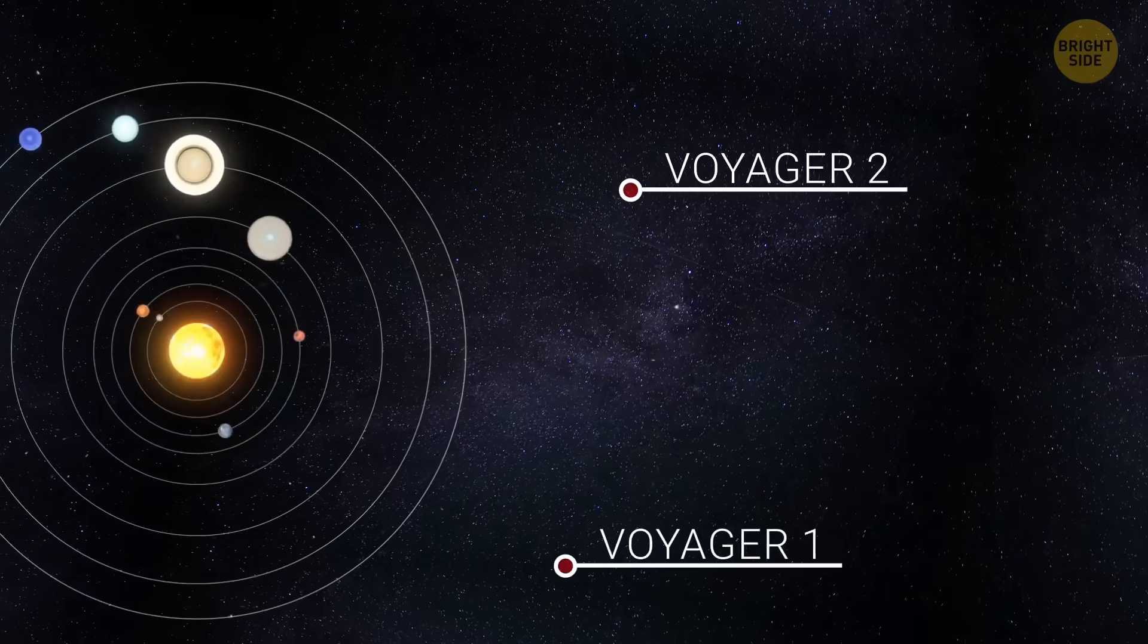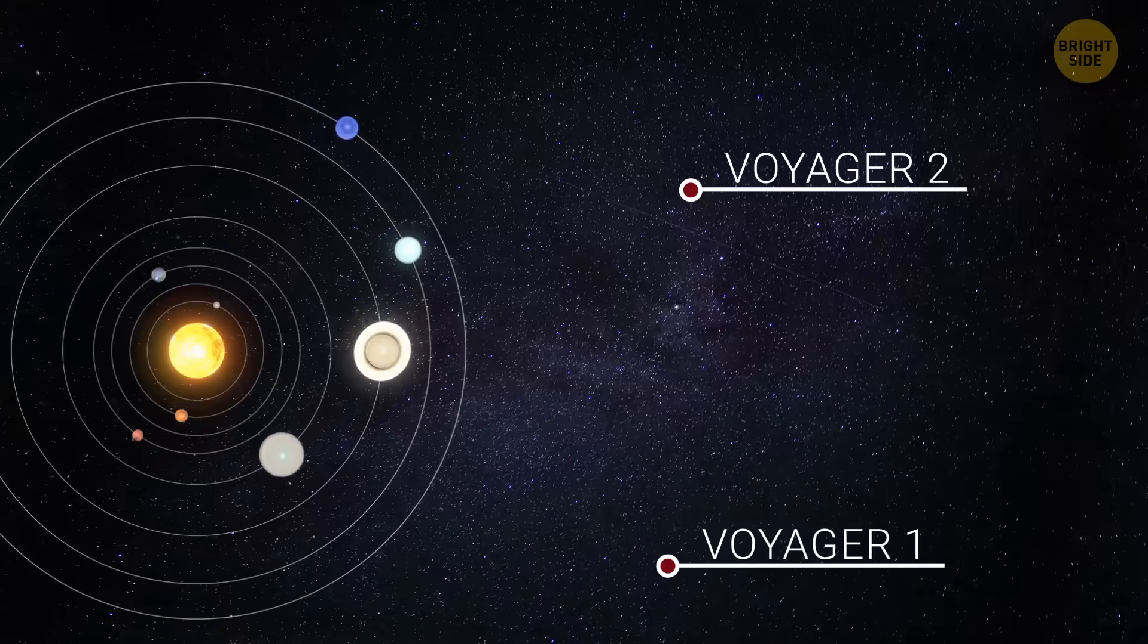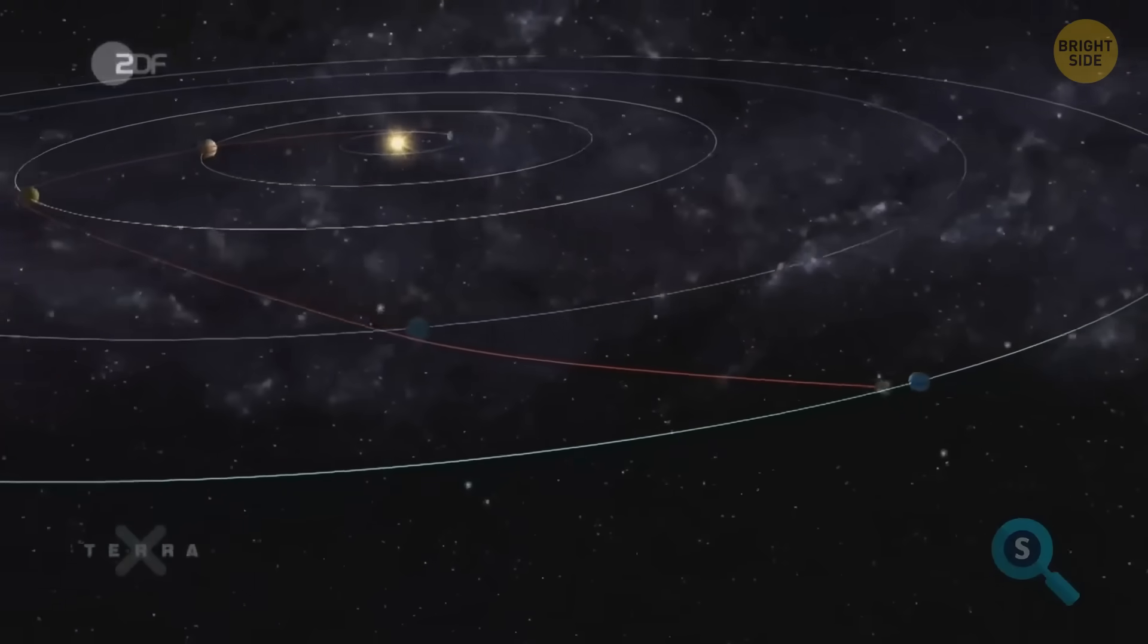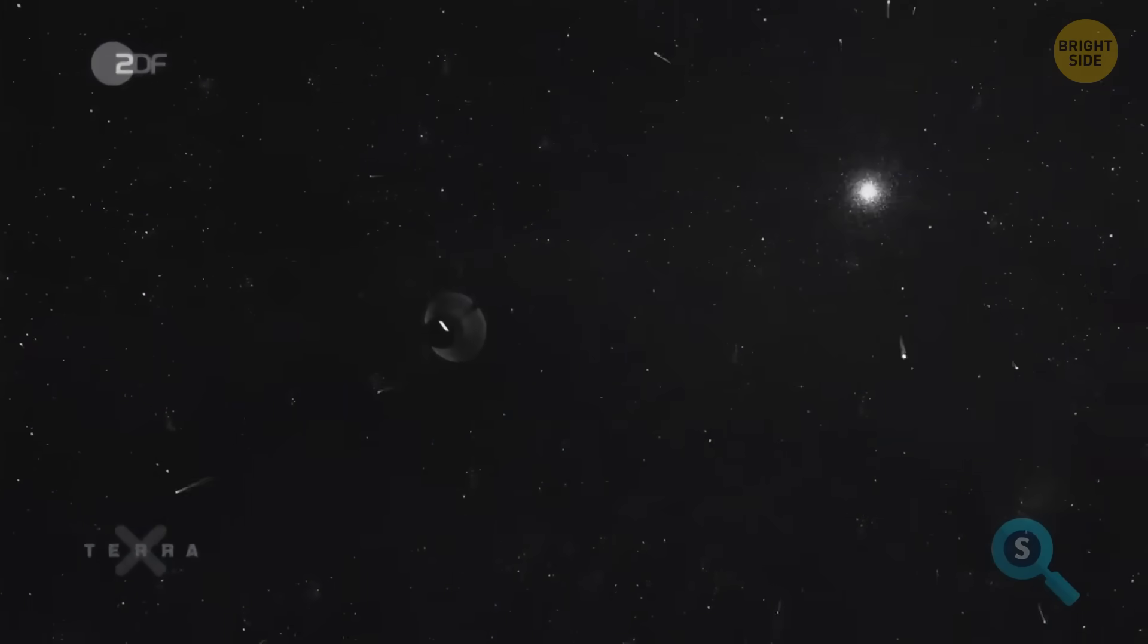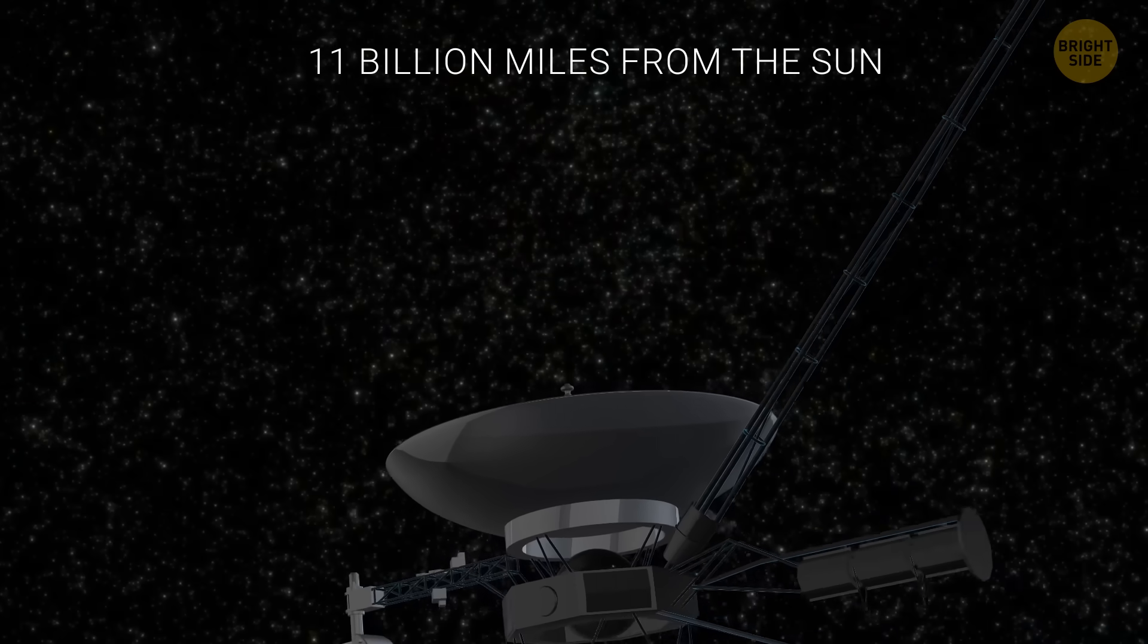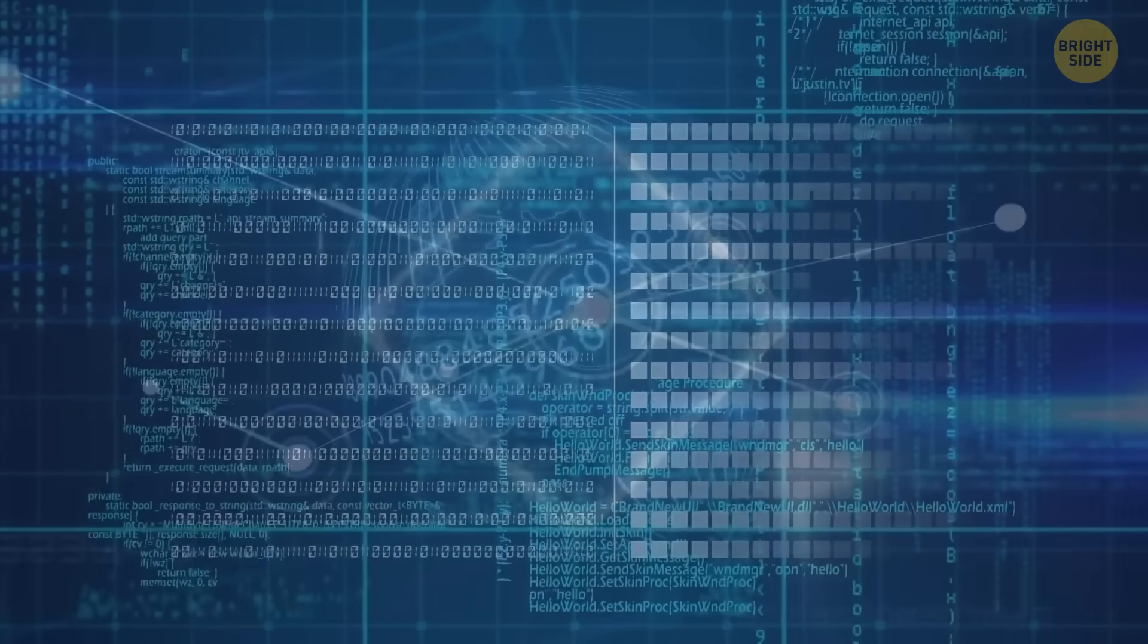After this, Voyager 2 joined Voyager 1 on its journey toward interstellar space. Voyager 1 entered interstellar space in August 2012 and Voyager 2 joined it in November 2018. These missions helped scientists measure the edge of our solar system, about 11 billion miles from the Sun. The spacecraft still send back data about this mysterious region.